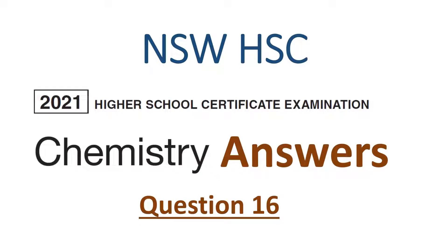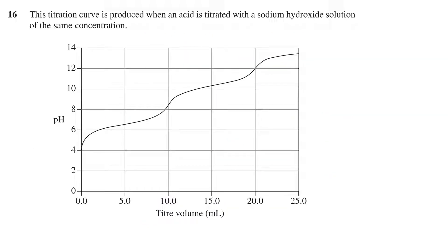In this video, we'll go over the answer to question 16 of the 2021 New South Wales HSC Chemistry Exam. The question states this titration curve is produced when an acid is titrated with a sodium hydroxide solution of the same concentration.